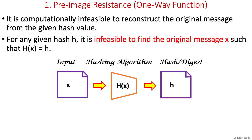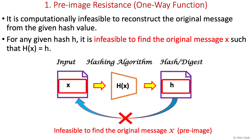Let's start with the first property, pre-image resistance, which states that for a given hash value, it is computationally infeasible to reconstruct the original message. In other words, there is no inverse operation for a hash function like encryption and decryption. From the security viewpoint, attackers cannot find the original message or pre-image of any known hash. If this is true for any hash function or algorithm, then that hash function is pre-image resistant.